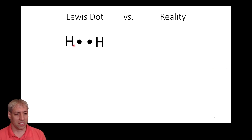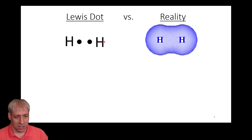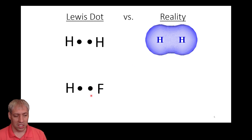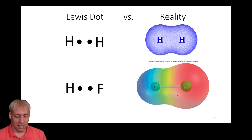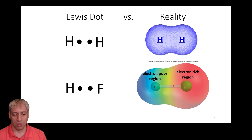When we look at our Lewis dot structure and draw a bond between two hydrogen atoms, we draw two electrons or a line — those two hydrogens share an electron. Beyond just drawing them on the page, these are electron clouds shared between those atoms. When you look at something like HF, it's also sharing electrons and the drawing looks exactly the same, but the chemical reality is you're going to have an electron-poor region and an electron-rich region — an uneven sharing of those electrons between the species.